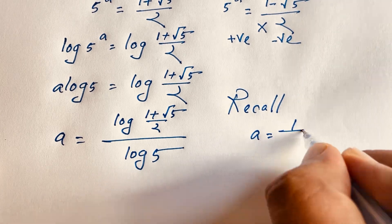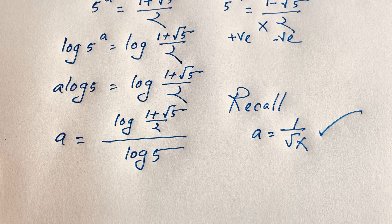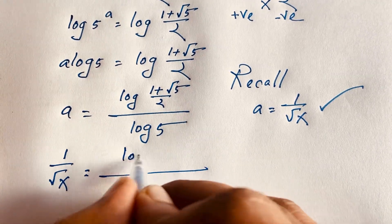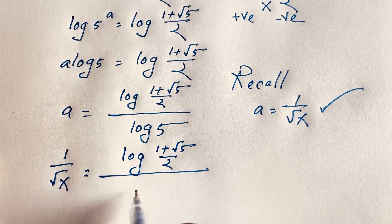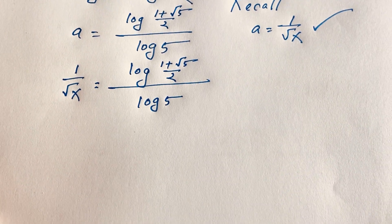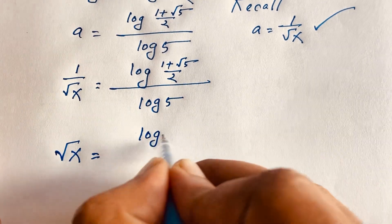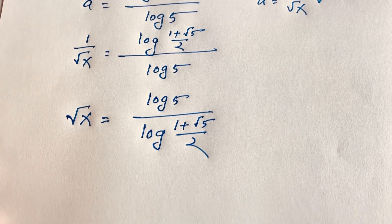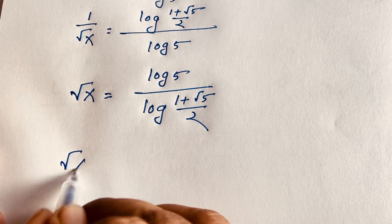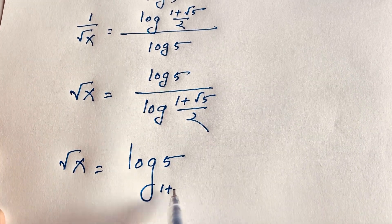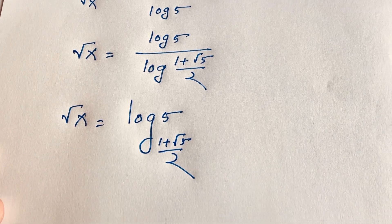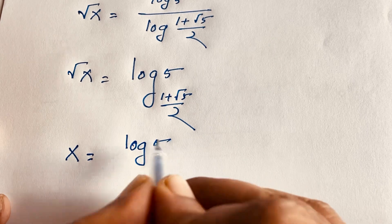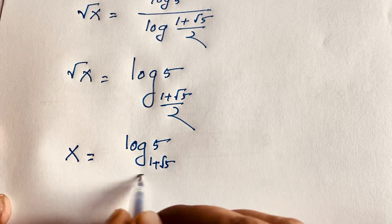Recall, a is equal to 1 over square root x. We let a equal to 1 over square root x, so putting this value in the expression: 1 over square root x equals log((1 plus square root 5) over 2) over log 5. Just changing the arrangement, square root x equals log 5 over log((1 plus square root 5) over 2), which can be written as square root x equals log base ((1 plus square root 5) over 2) of 5. Squaring both sides, x equals log base ((1 plus square root 5) over 2) of 5, squared.